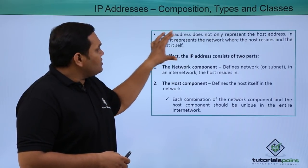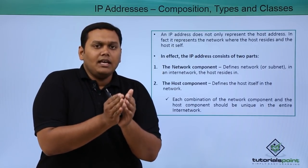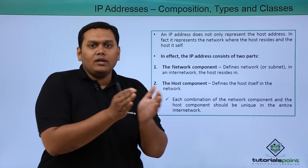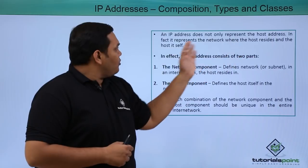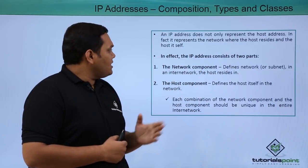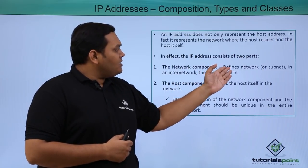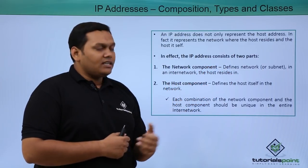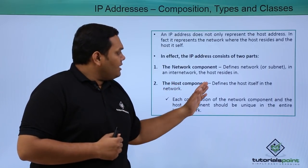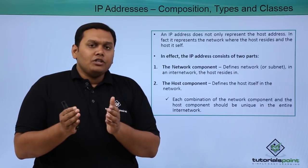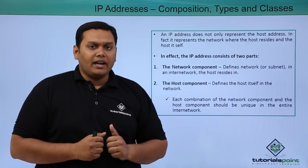An IP address does not only represent the host address. As I discussed previously, an IP address has two parts: one is host component, one is network component. In fact, both network and host reside on the host itself. You can see here in the IP address, two parts are network and host component. This defines networks or subnets in the internet network where the host resides, and the host component defines the host itself in the network. Combination of network component and host component both comprise the IP address.